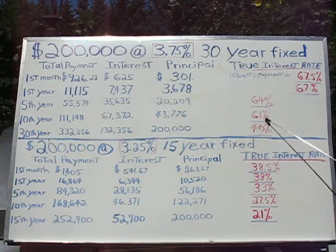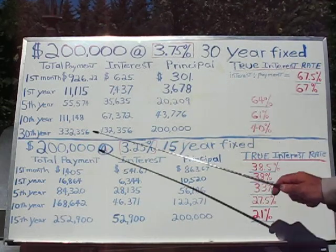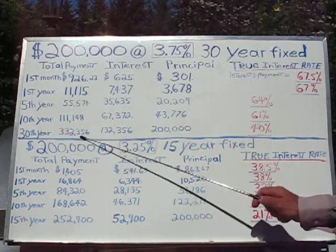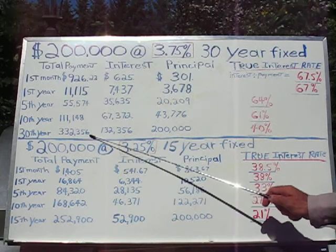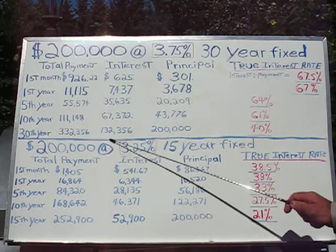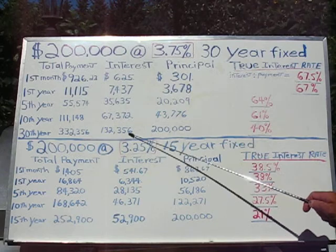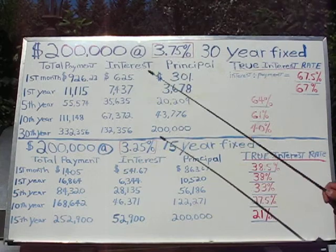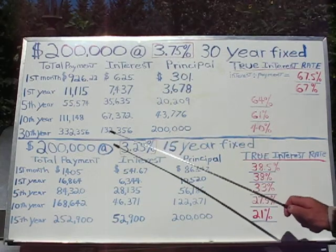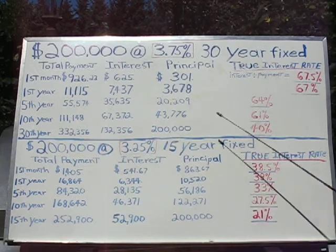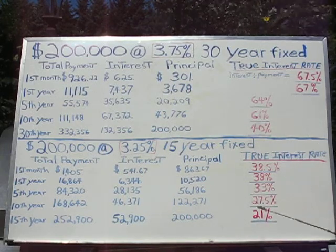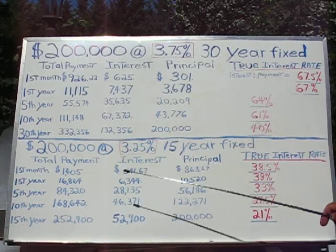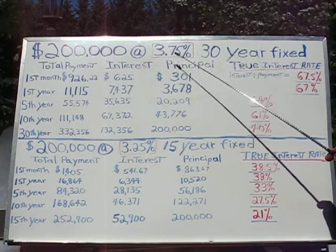At year ten, the total true interest rate paid comes to 61%. And if you carry it all the way through 30 years, you've actually spent $332,356 out of your pocket, of which $132,356 was applied toward interest. You've paid the loan off, but this is what you've really paid: that interest divided by the total payment equals 40%. You've ended up paying 40% on average over the lifetime of this loan — nowhere near this illusionary quoted rate.